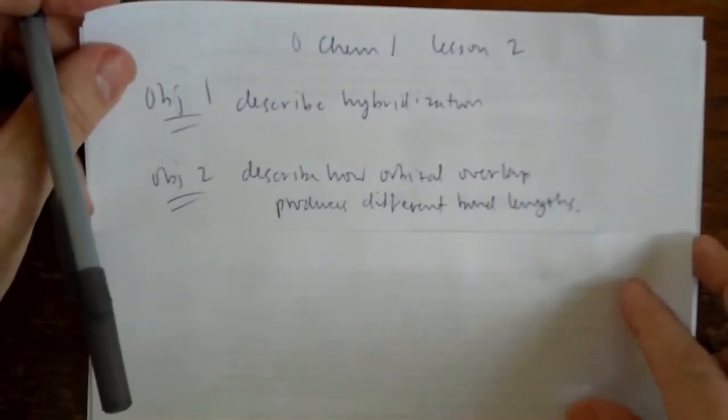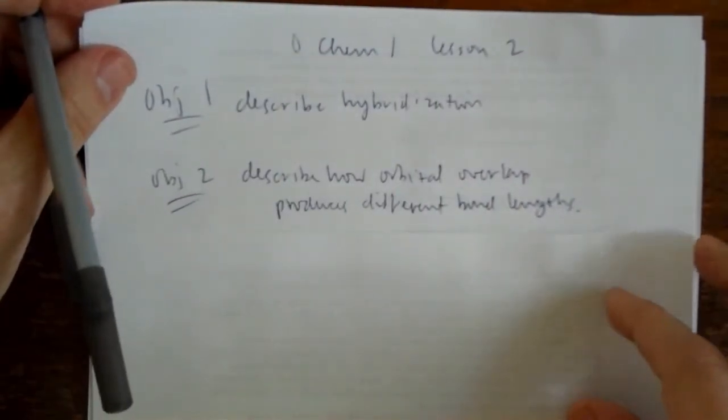Objective number two is describe how orbital overlap produces different bond lengths. All right, so let me talk about that briefly. I'm not going to do as well as the book does, but in case it's helpful to hear someone say it, let's look at it like this.